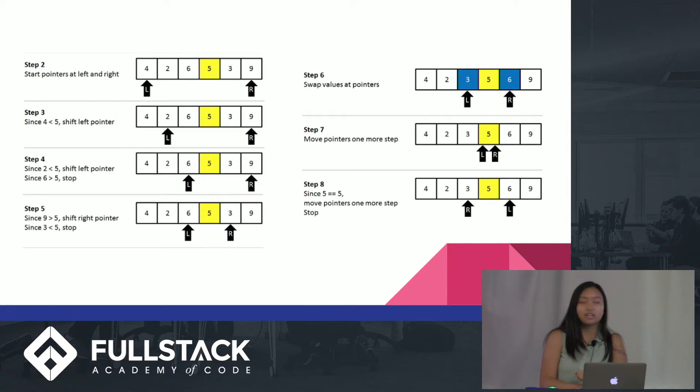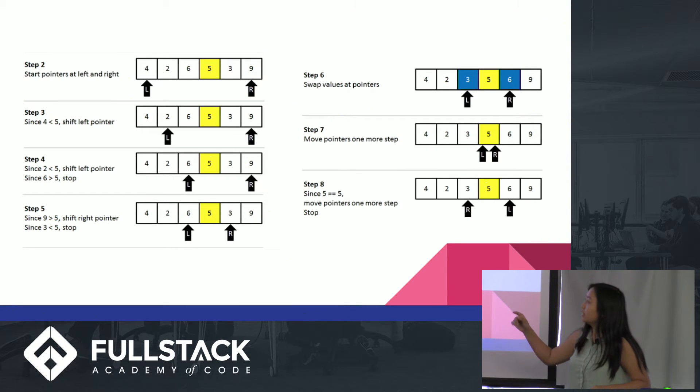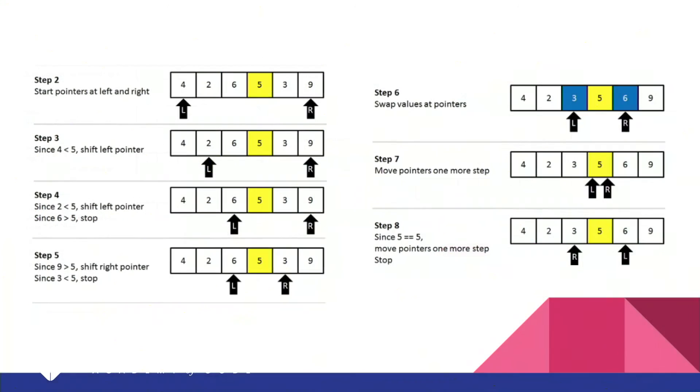So this is a visualization of it, if you're still confused. As you can see, you can see the left and right pointers, and in this case, five is the pivot. So step three, you move it up to two, and then two is less than five, so you continue moving the left pointer, and then you hit six. Six is greater than five, so you stop the left pointer, and you start moving the right pointer, and then you continue on the right side. For step six, you swap the two, and then you continue down. In step eight, they've crossed, so the partitioning is done.